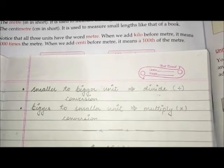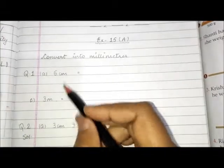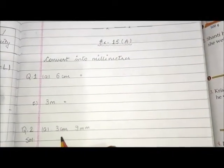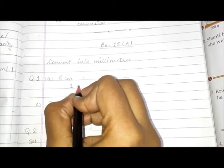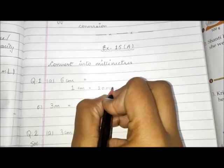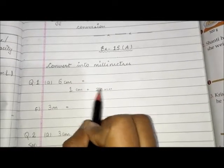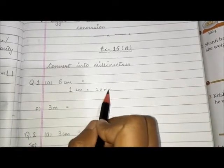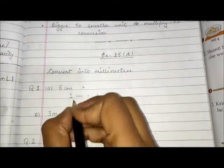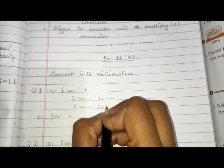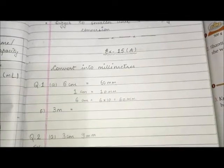We are going to solve Exercise 15a. Question number one: convert into millimeters. In one centimeter there are 10 millimeters. Here we convert from bigger to smaller, and when we convert bigger to smaller we multiply. So in one centimeter there are 10 millimeters, so in 6 centimeters there will be 6 into 10, that means 60 millimeters. So the answer is 60 millimeters.